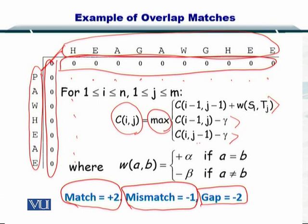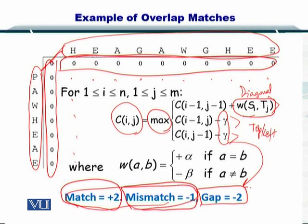So this was your top and left which included gap, and this was your diagonal element. And it included match or a mismatch score added to the position value like that. So you used this strategy to complete this matrix.